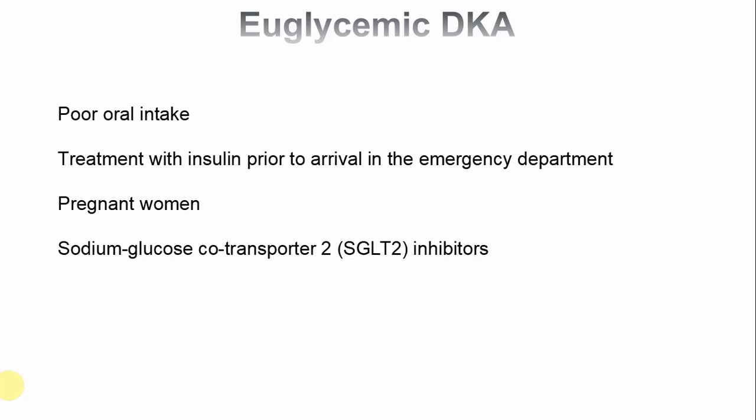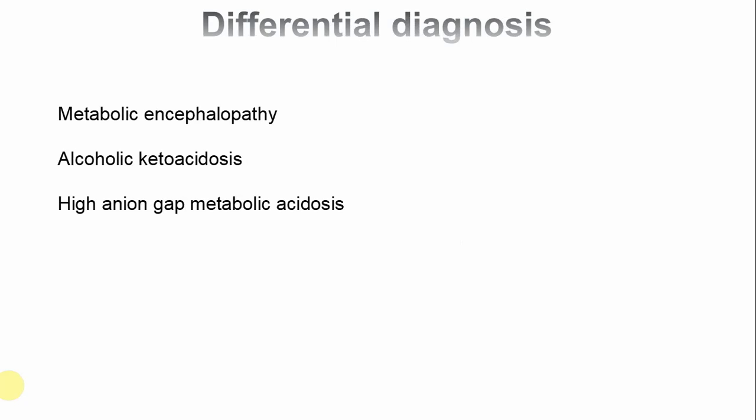There are many differential diagnoses for DKA. Because patients can have a reduced level of consciousness, metabolic encephalopathy such as hepatic encephalopathy should be considered. Alcoholic ketoacidosis is also a consideration — its unique feature is that patients do not develop coma; GCS is usually 14 or 15, distinguishing it from DKA. Various other causes of high anion gap metabolic acidosis, captured by the mnemonic MUDPILES, can all come into the differential diagnosis.